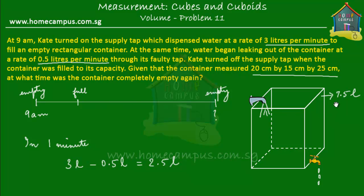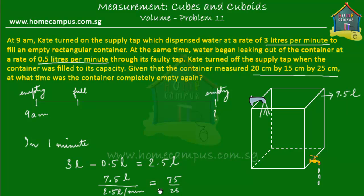So how long will it take to fill the container to its capacity of 7.5 liters? The capacity is 7.5 liters and the net fill rate is 2.5 liters per minute. So 7.5 divided by 2.5 — that's 75 divided by 25 — equals 3 minutes. It will take 3 minutes to fill the container to its maximum capacity.